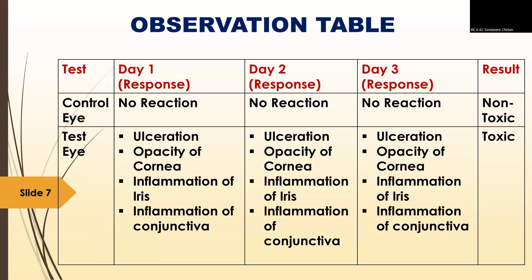Observation table: the control eye shows no reaction on day one, no reaction on day two, and no reaction on day three — the control eye is normal with no toxic effect on the right eye. In the test eye, on day one we can clearly observe ulceration, opacity of the cornea, inflammation of the iris, and inflammation of the conjunctiva. All four parameters are observed on day one, day two, and day three, and the effects become severe. Therefore, the test drug was toxic to the eye of the rabbit.